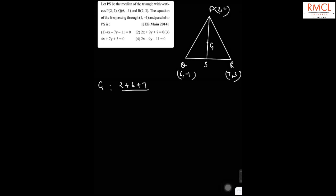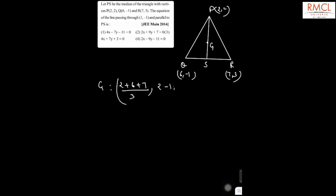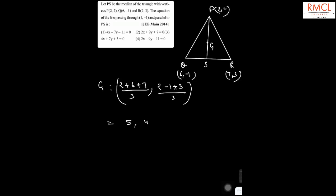So P is (2, 2), Q is (6, -1), and R is (7, 3). We know that the median also passes through the centroid of the triangle. The centroid G is given by ((2 + 6 + 7)/3, (2 - 1 + 3)/3), which equals (5, 4/3).